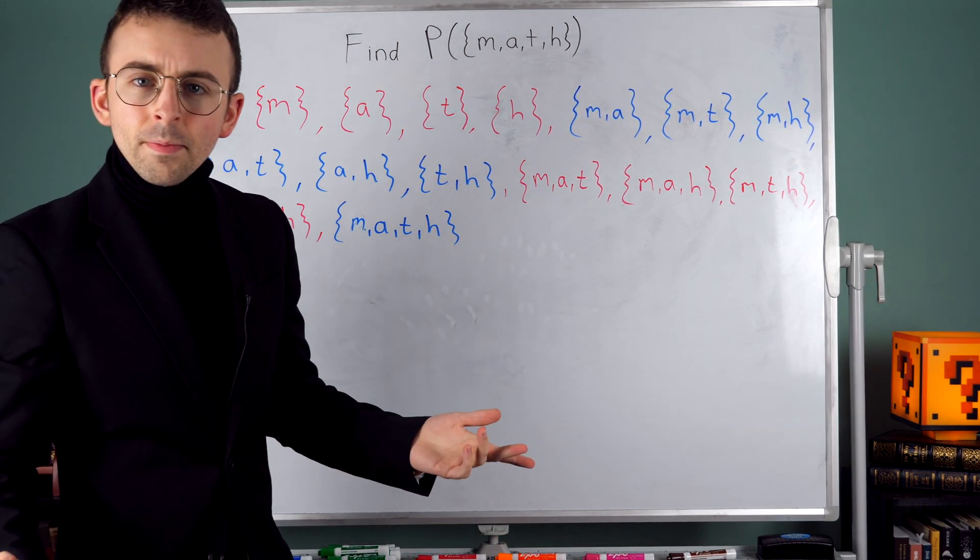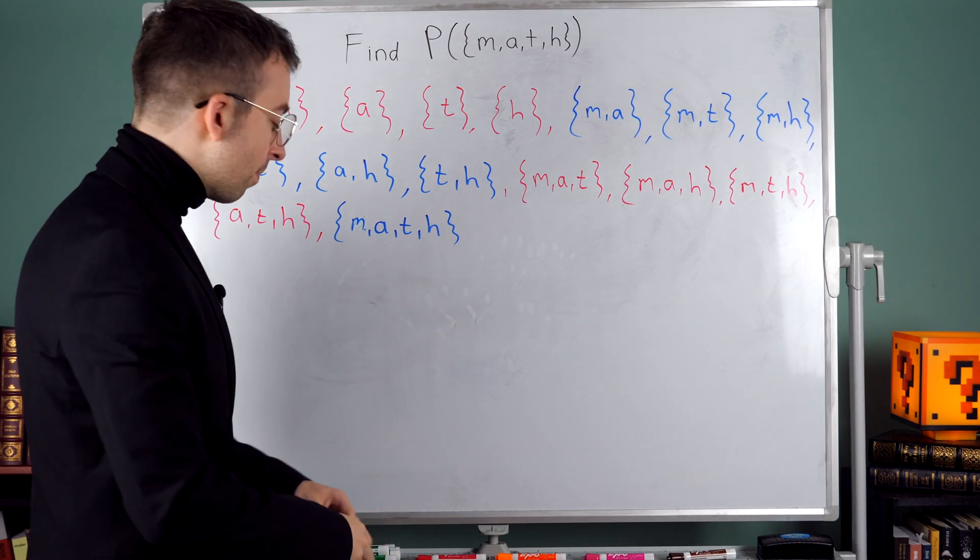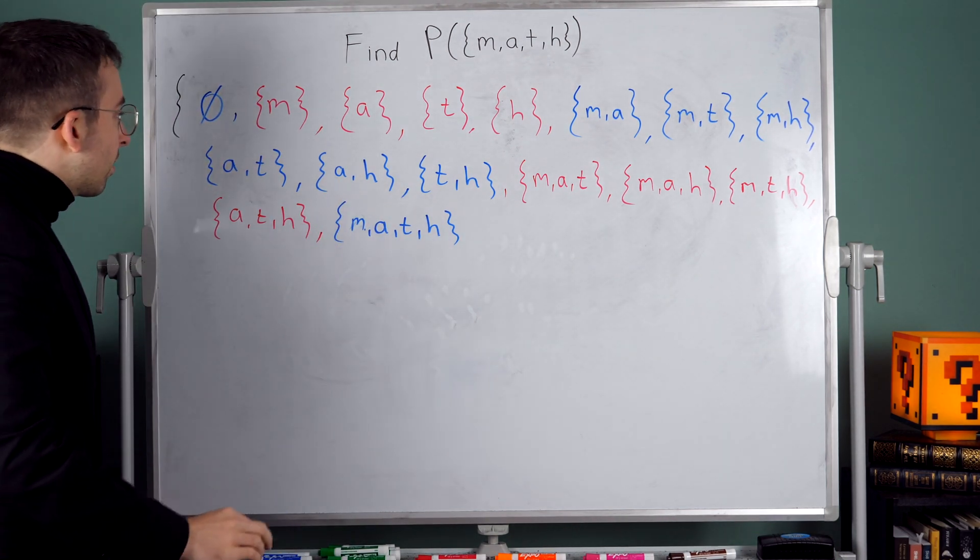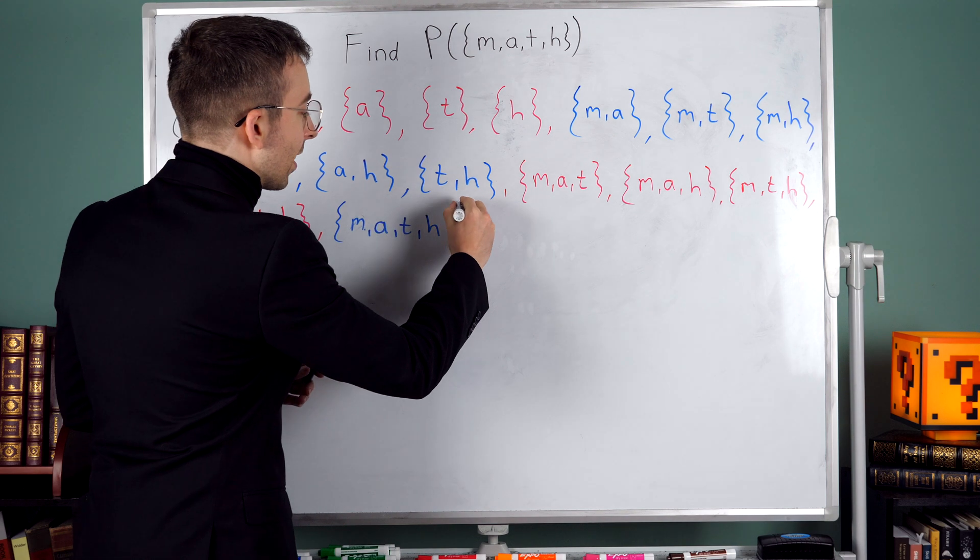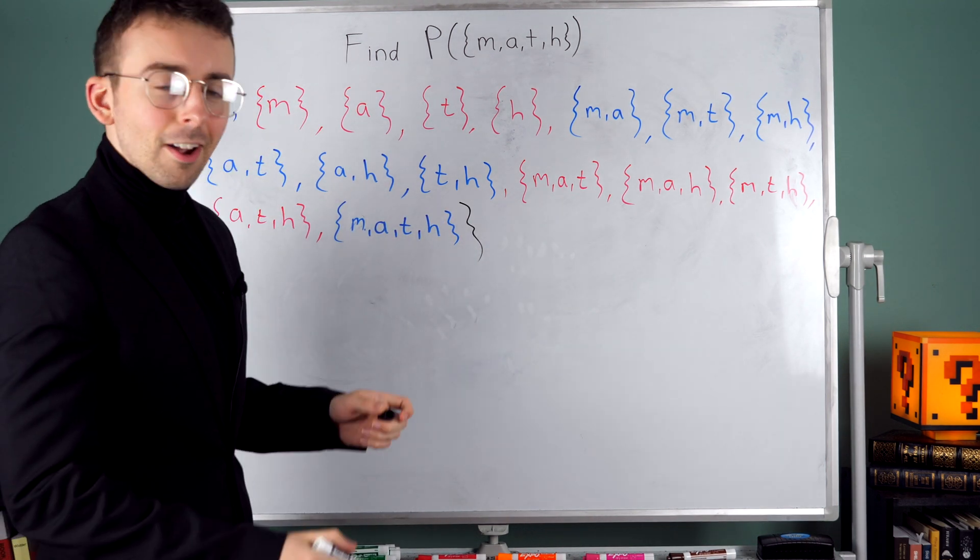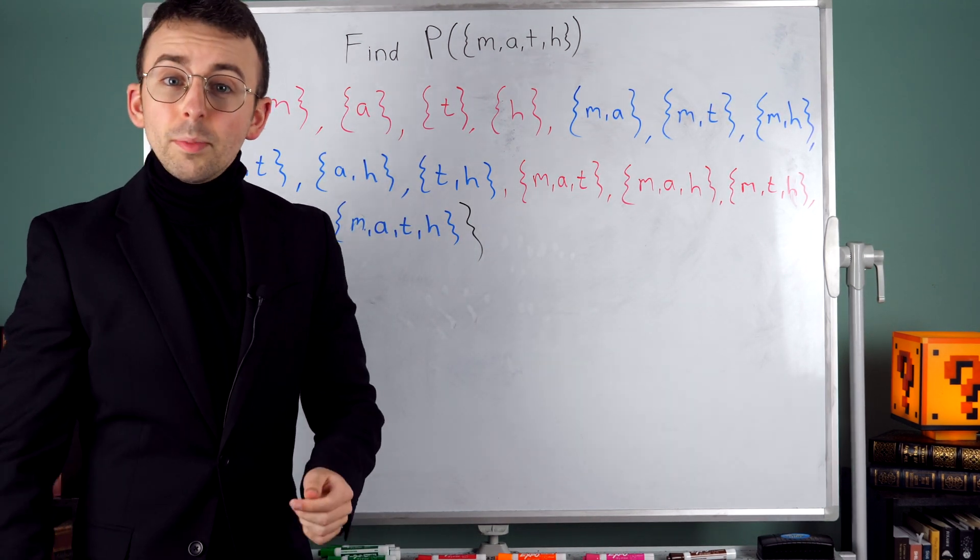So am I done? Have I got all the subsets? If these are all the subsets, then by definition this is the power set as long as I, you know, close my set off. How can I check to be sure?